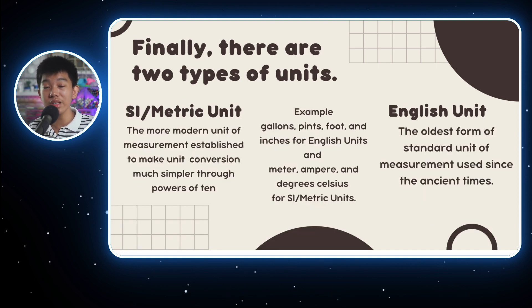Finally, there are actually two types of standard units of measurements. We have the metric unit, which is the modern way of measuring, using conversion, making conversion simple through the powers of 10. And the English unit, which are the beginning of measurement that use very old standards, such as gallons, pints, and foots. But for metric units, there are the units we mentioned earlier, like meters, weight, length, mass, and ampere, and brightness for example.